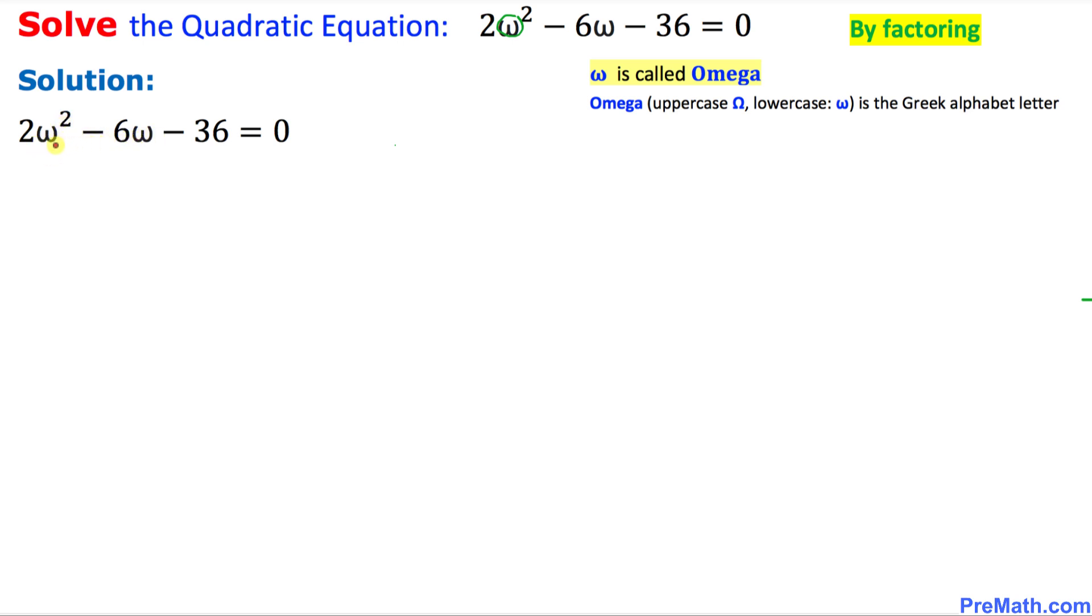I've just put down this quadratic equation right here. As we can see, this equation is divisible by 2 across the board, so I'm going to divide it by 2. Once we divide, the 2s cancel out, so we end up with ω² - 3ω - 18 = 0.